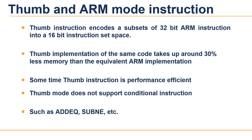The Thumb instruction set encodes a subset of the 32-bit ARM instructions into a 16-bit instruction set space. Thumb has higher performance than ARM on a processor with a 16-bit data bus, but lower performance than ARM on a 32-bit data bus.